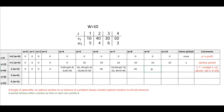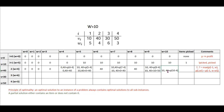For w equal to 9, applying the same principle — either we do not pick the item and get 10, or we pick the item and get 40 plus profit from the remaining weight, which is 9 minus 4 equals 5. P5 is 10. So either 10 or 40 plus 10, which is 50. Our profit has increased this time. For the final value at w equal to 10, we apply the same formula: 10 minus 4 is 6, and P6 is also 10. So our profit remains 50.